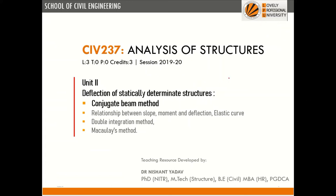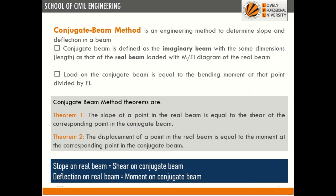In this lecture we are going to see the conjugate beam method and solve elementary problems to calculate deflection in statically determinate beams. The conjugate beam is an engineering method to determine slope and deflection. It is defined as an imaginary beam with the same dimensions as the real beam, loaded with the M/EI diagram of the real beam.